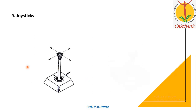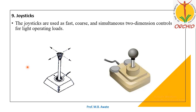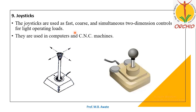Joysticks — most of us are familiar with these, sometimes used while playing video games. Joysticks are used for fast, coarse and simultaneous two dimensional control for light operating loads. Two dimensional control means we can move the joystick in two directions. They are used in computers and CNC machines.